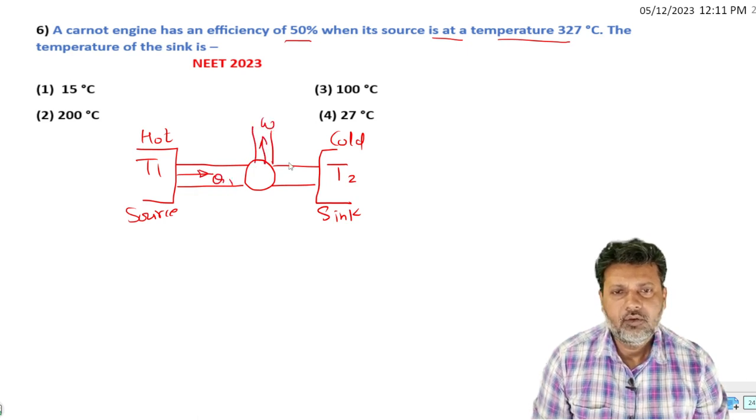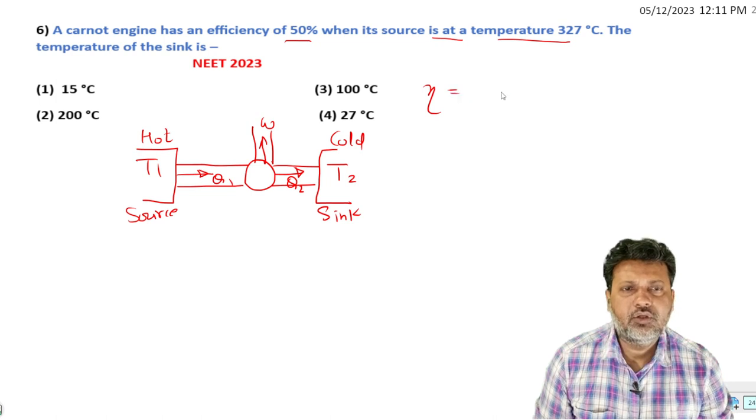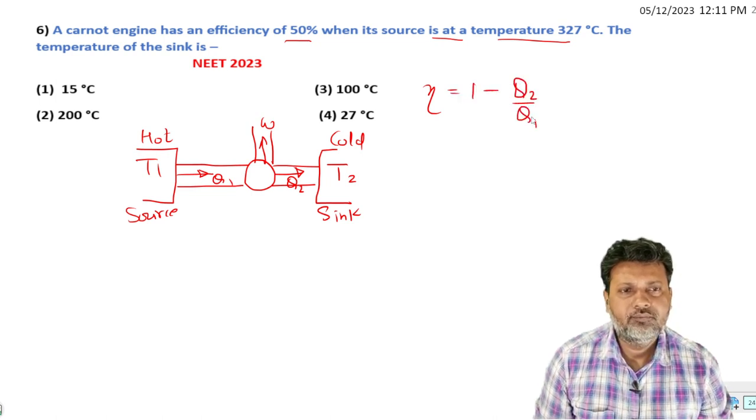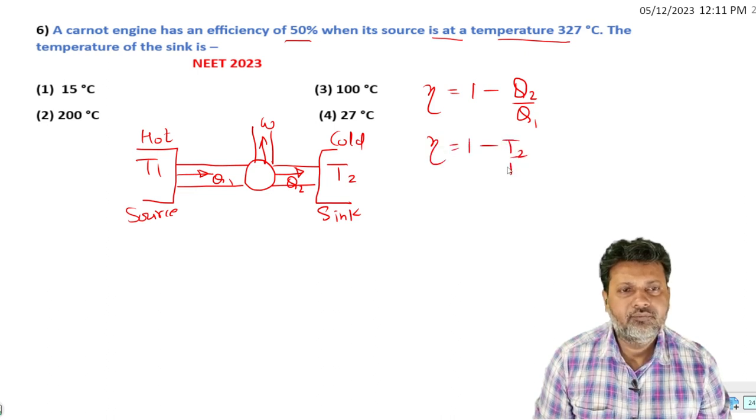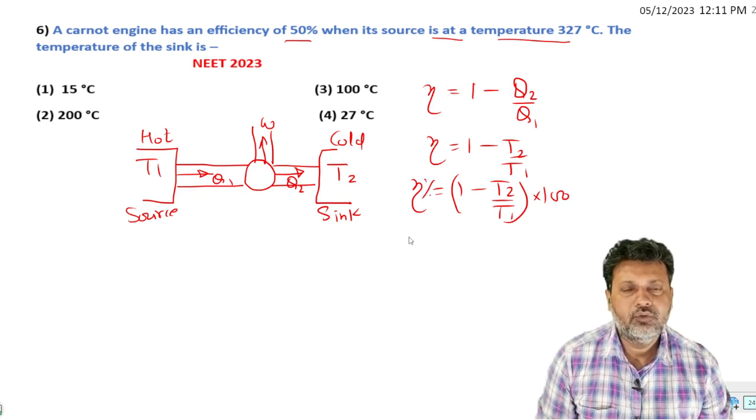The efficiency equation: efficiency is equal to one minus Q2 by Q1, which is equal to one minus T2 by T1. To convert to percentage: one minus T2 by T1 into 100.